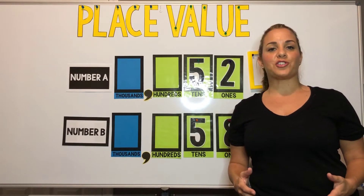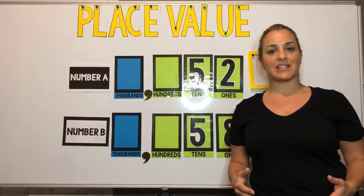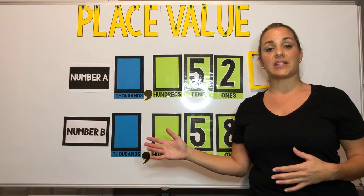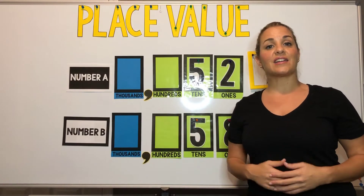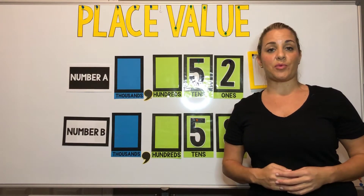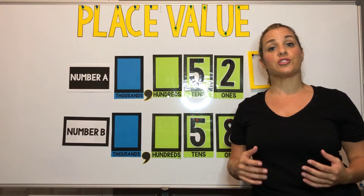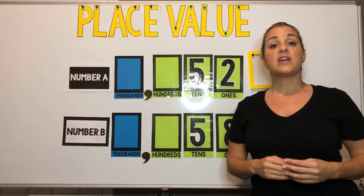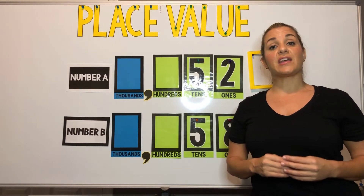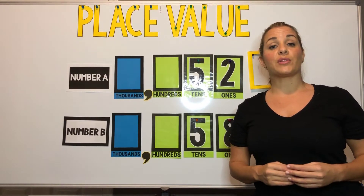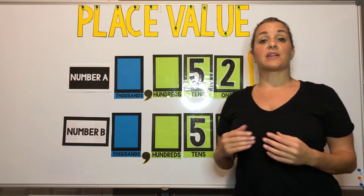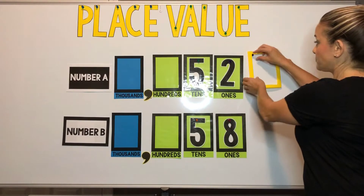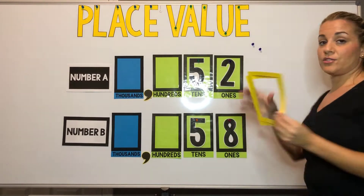In third grade, your place value chart is not going to be as extensive — it's going to go to the thousands place and it's not going to include any decimal points, because your students need to be able to do operations within a thousand. But one thing you can work on with them is comparing two numbers.